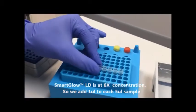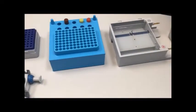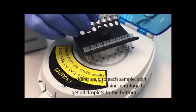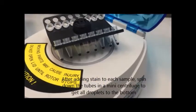After adding all of our markers and DNA stain to our tubes, we are going to again spin them down in a mini centrifuge to get all of the droplets to the bottom.